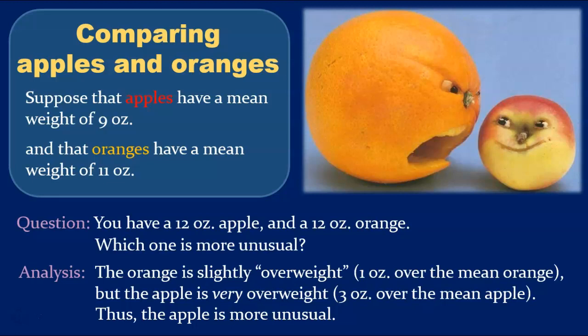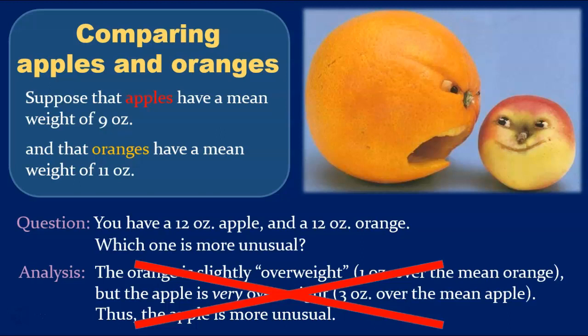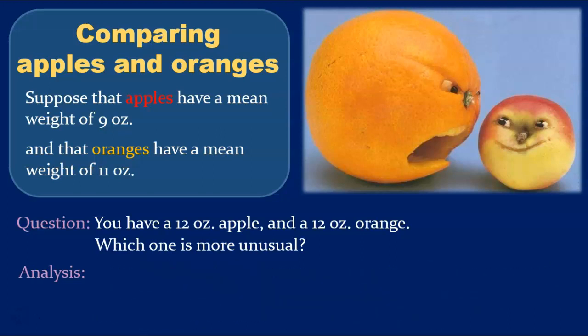Not too convincing, I hope, because it is a bad analysis. The numbers involved are all correct, but if we are to decide whether something is unusual, we must first know how much variation we can usually expect. To answer this question sensibly, we need to know the standard deviations involved. So, let's add this information. We'll suppose that apples have a standard deviation of 3 ounces, and that oranges have a standard deviation of half an ounce.